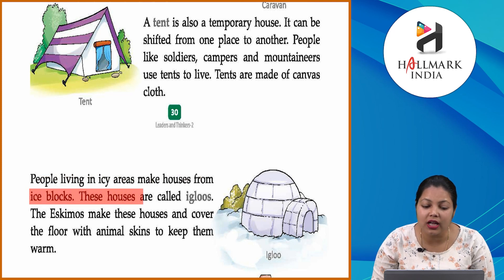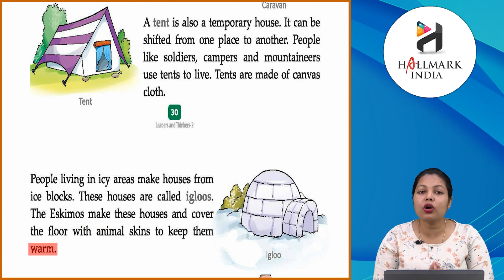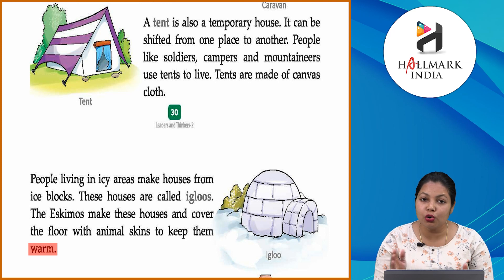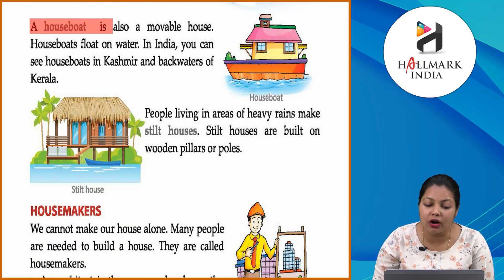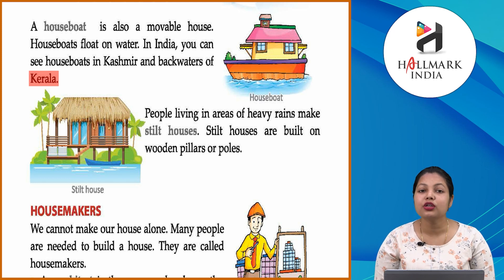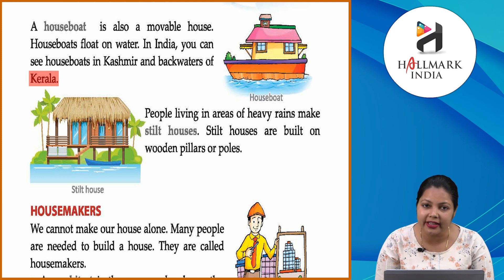People living in icy areas make houses from ice blocks — these houses are called igloos. The Eskimos make these houses and cover the floor with animal skin to keep them warm. जो लोग icy areas में रहते हैं वो igloos बनाते हैं और उन्हें Eskimos कहते हैं। A houseboat is also a movable house that floats on water. In India, you can see houseboats in Kashmir and the backwaters of Kerala.